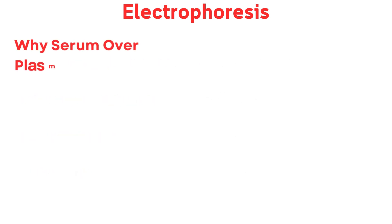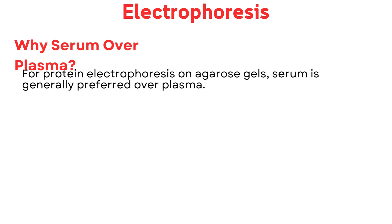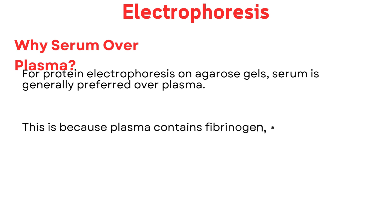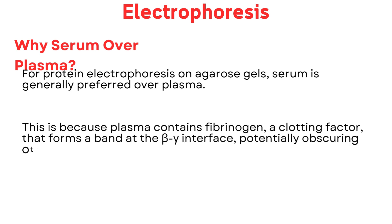Why serum over plasma? For protein electrophoresis on agarose gels, serum is generally preferred over plasma. This is because plasma contains fibrinogen, a clotting factor, that forms a band at the beta-gamma interface, potentially obscuring other protein bands.